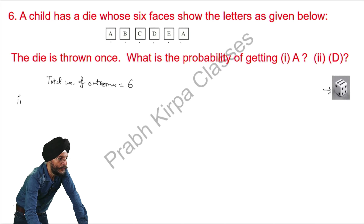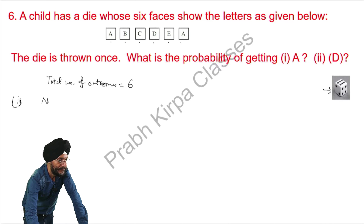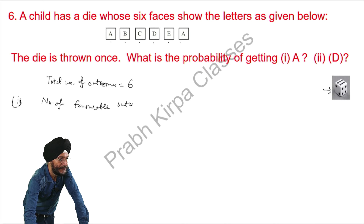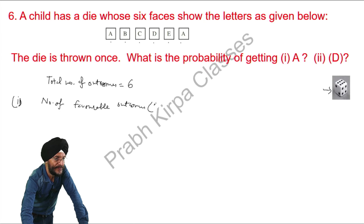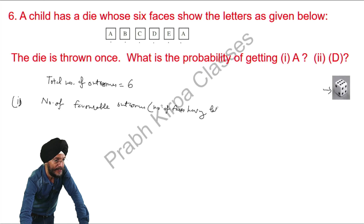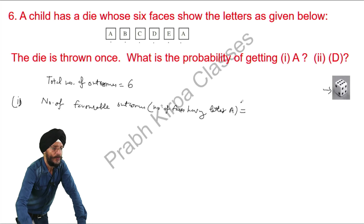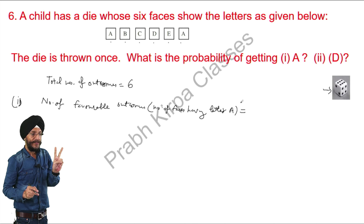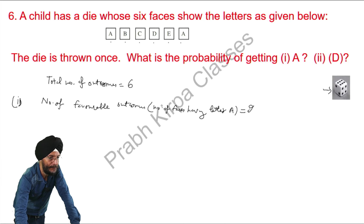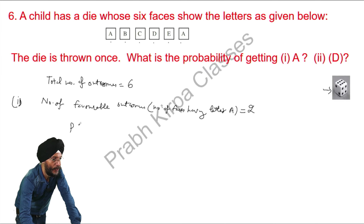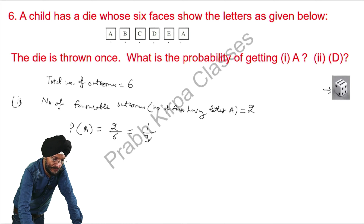We will solve the first part of the question: what is the probability of getting A? The number of favourable outcomes is the number of faces having the letter A. Two faces have the letter A on them, so the number of favourable outcomes is 2.